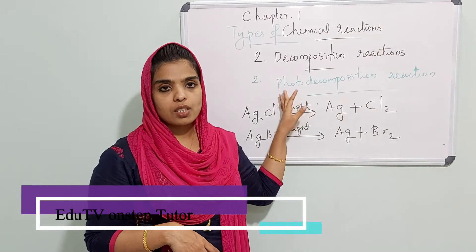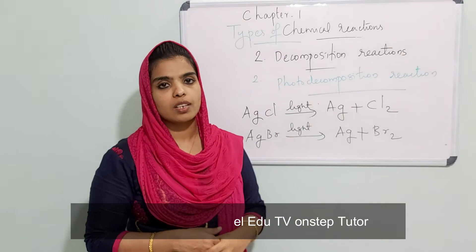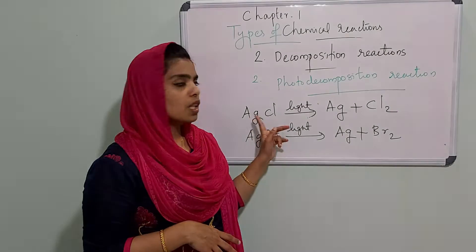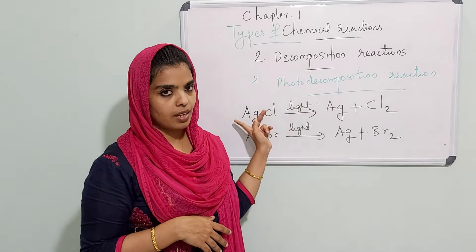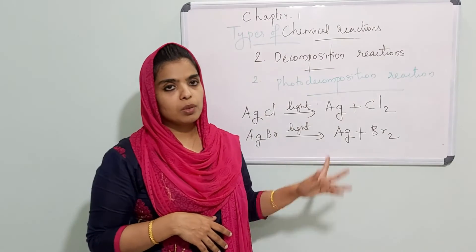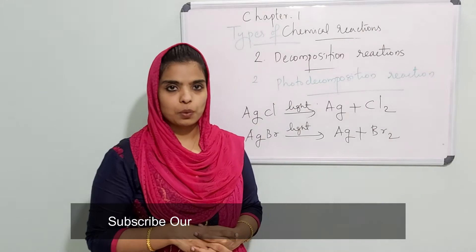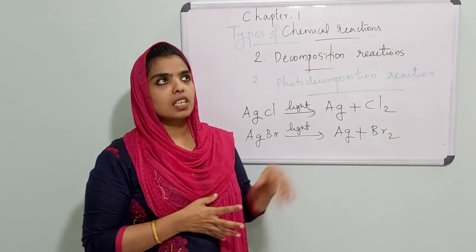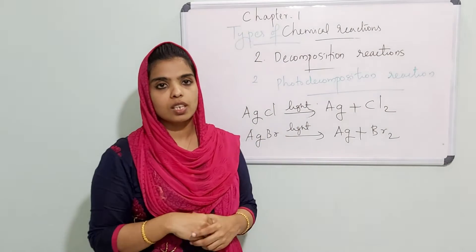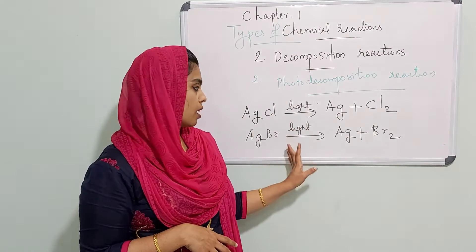Photo decomposition reactions are reactions in which light energy is absorbed for decomposition to take place. For example, an unknown white substance X, when exposed to sunlight, changes to a gray-colored substance — that substance X is silver chloride. Silver chloride and silver bromide are also the salts used in black and white photography.